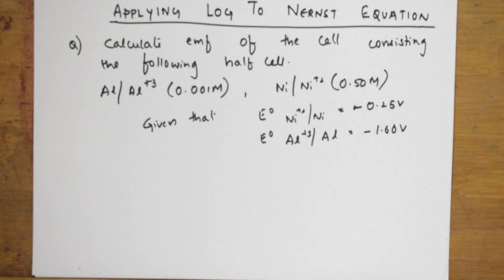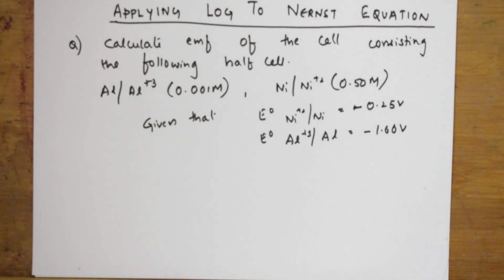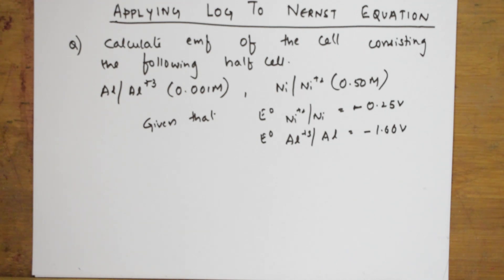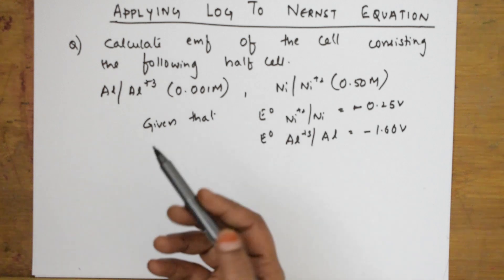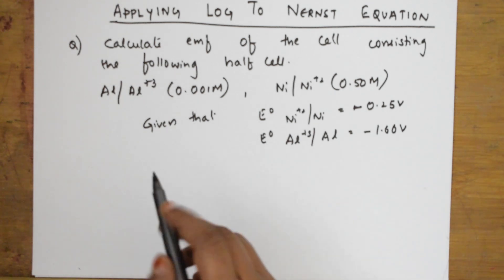Welcome back students. Yesterday I taught you the trick of how to find log values without log tables. Now we'll be applying the same concept to the Nernst equation. In electrochemistry, every numerical you solve requires you to find a log value. You need to remember the values of log 2, log 3, log 5, and log 7, which I discussed in the earlier video. Now I'll apply that concept to this Nernst equation numerical.